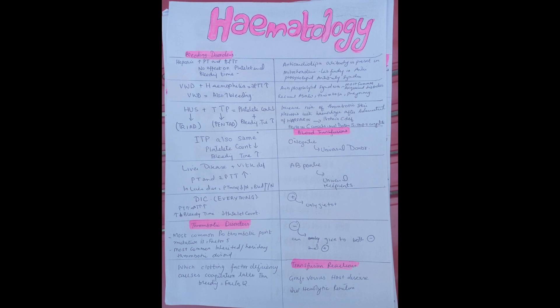DIC, there is disseminated intravascular coagulation. All these things are normal and the D-dimers or fibrin degradation products increase. These are the important bleeding disorders that you need to remember.